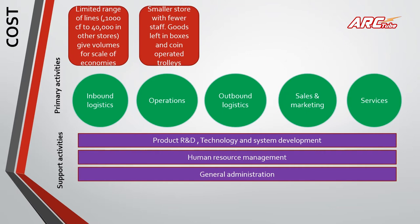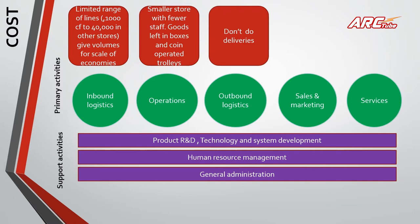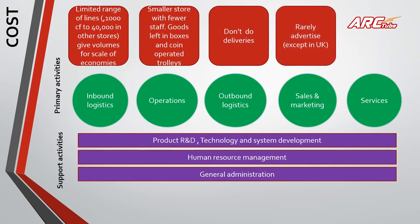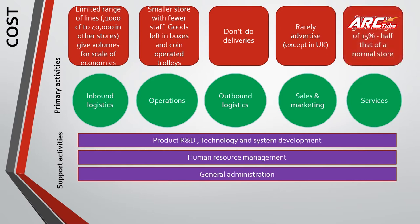For outbound logistics, Aldi doesn't do deliveries, which saves cost further. For sales and marketing, they rely on word of mouth and are low on advertising spend — they are famous for cost advantage. When it comes to services, they operate on a gross margin of 15%, about half that of a normal store. This means they can give customers products at a lower price because they are saving cost across all these primary activities.